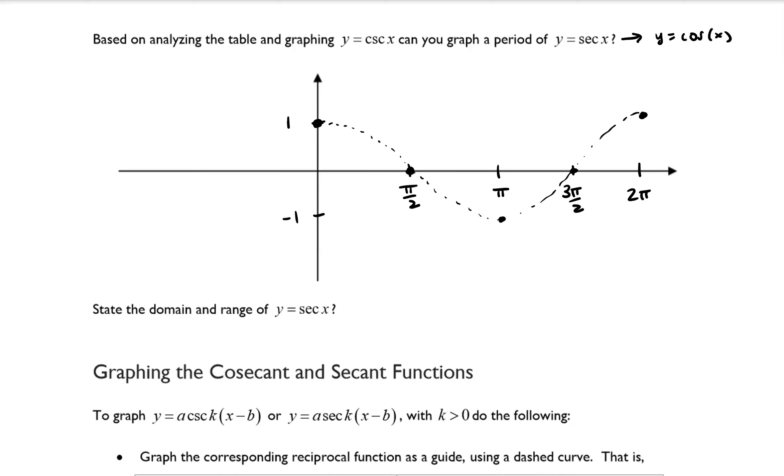Now, just like when we were graphing cosecant, we are going to have vertical asymptotes wherever cosine is equal to 0. So cosine is equal to 0 at x equals pi over 2 and x equals 3 pi over 2.